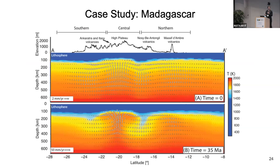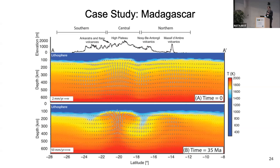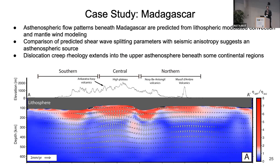ASPECT is time dependent, so you can run it forward in model time. The top profile is an instantaneous model; the bottom shows the model after 35 million years, demonstrating this type of convection is stable. We call this lithospheric modulated convection — purely constrained by the structure of the lithosphere. We did mantle wind modeling as well, imposing boundary conditions to test different flow fields, and predicted shear wave splitting parameters with an asthenospheric source in Madagascar.